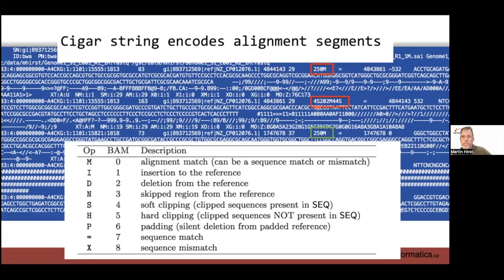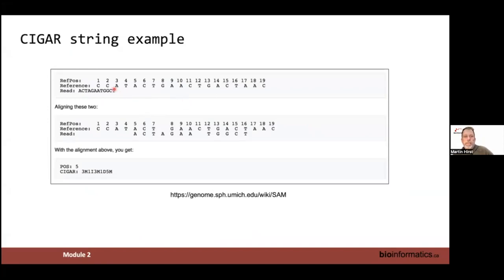CIGAR string examples: '250M' means all 250 bases matched the reference. A more complex example might show '4S' for 4 soft-clipped bases, '202M' for 202 matches, then '44S' for 44 soft-clipped bases at the end. A toy example with an insertion and deletion produces a CIGAR like '3M 1I 3M 1D 5M'. The CIGAR string is not particularly useful for ChIP-seq but is important in other analytical strategies.